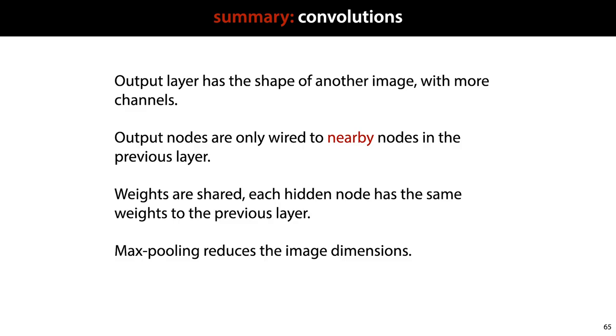So that's convolutions, a type of layer where the input tensor can be thought of as an image, and the output tensor is another image with more channels. It's wired so that output nodes are only wired to nearby nodes in the previous layer, and so that weights are shared, so that each hidden node has the same weights to the previous layer. And generally we interleave convolution layers with max pooling layers to reduce the image dimensions as we increase the number of channels.